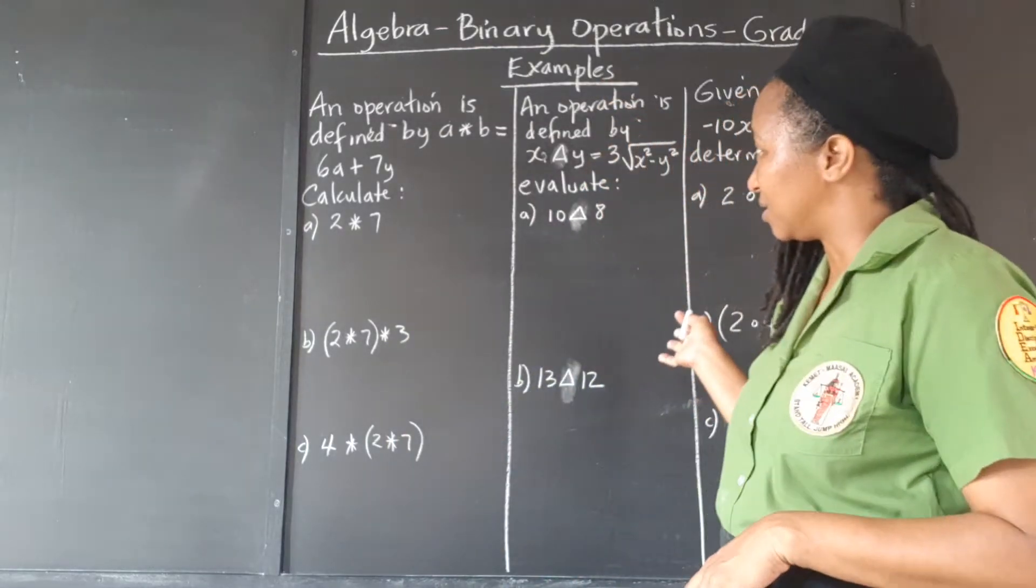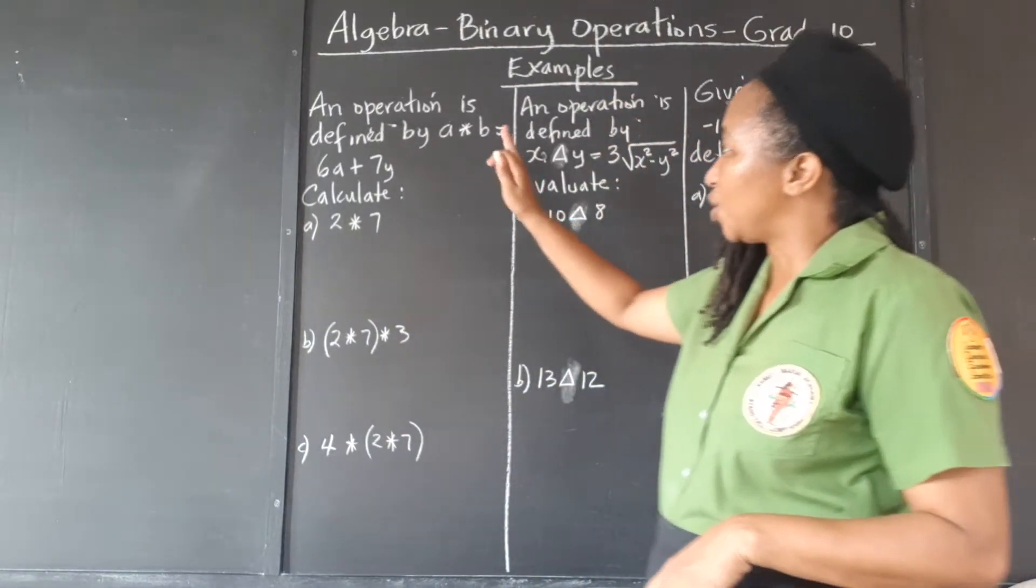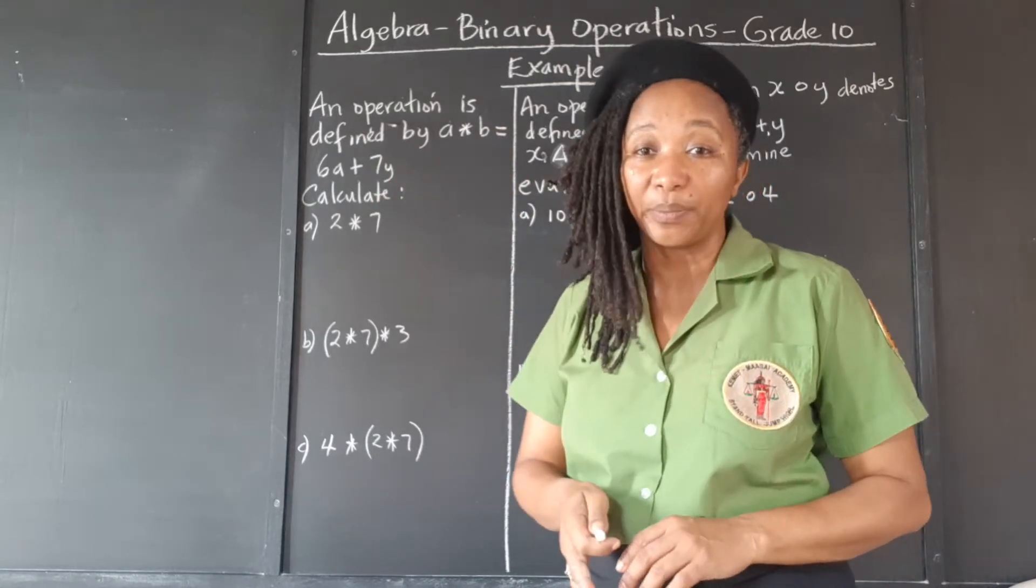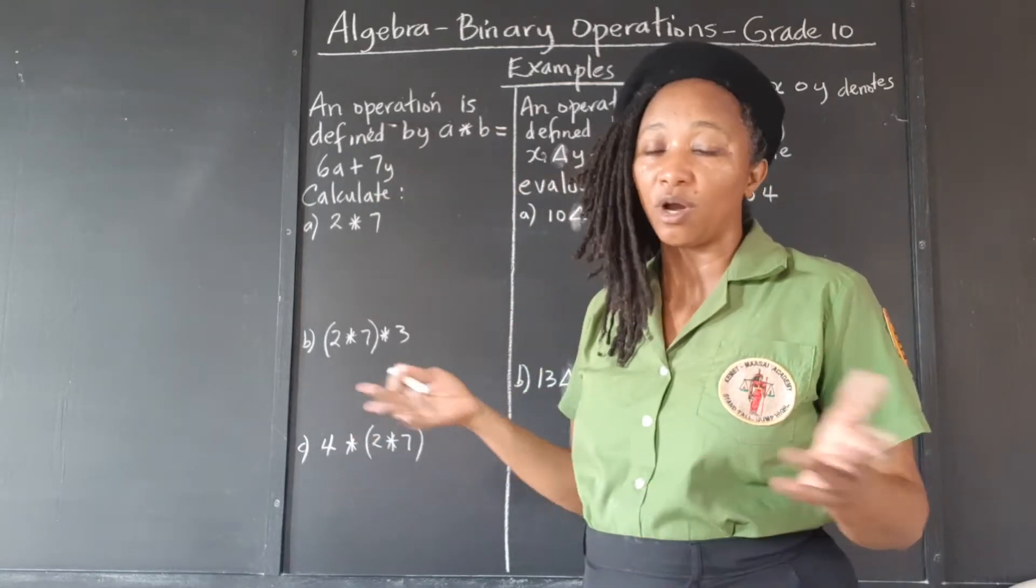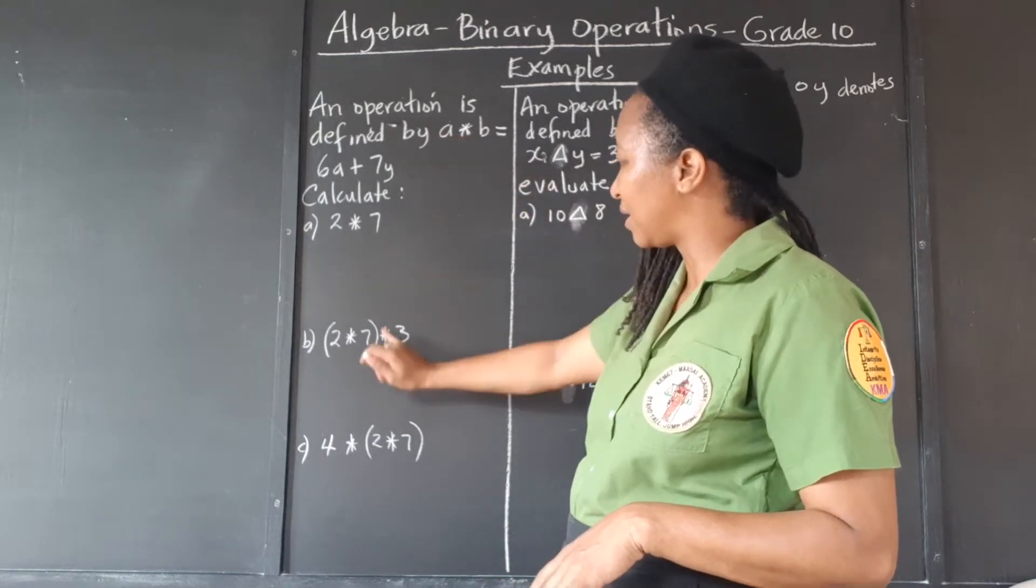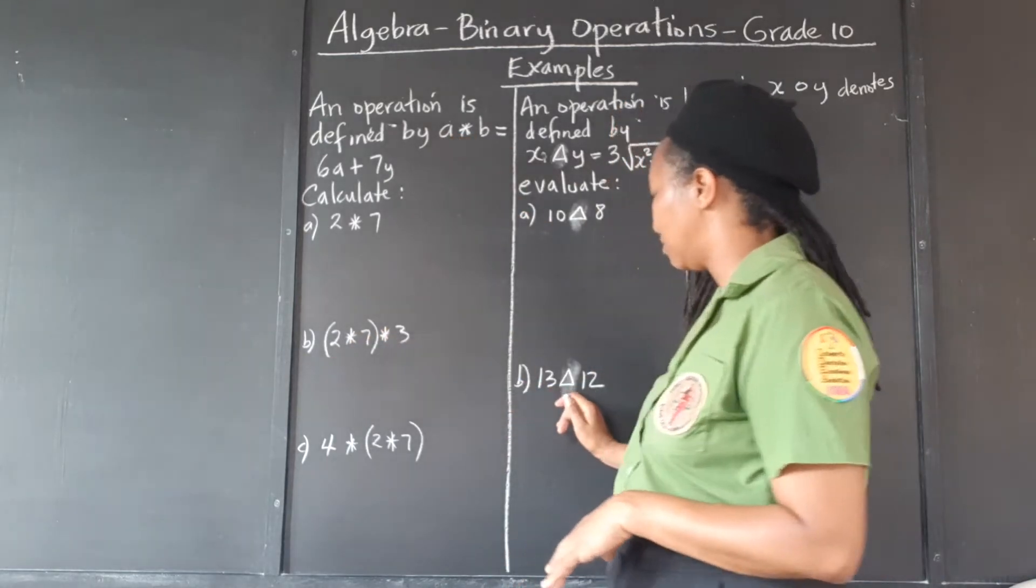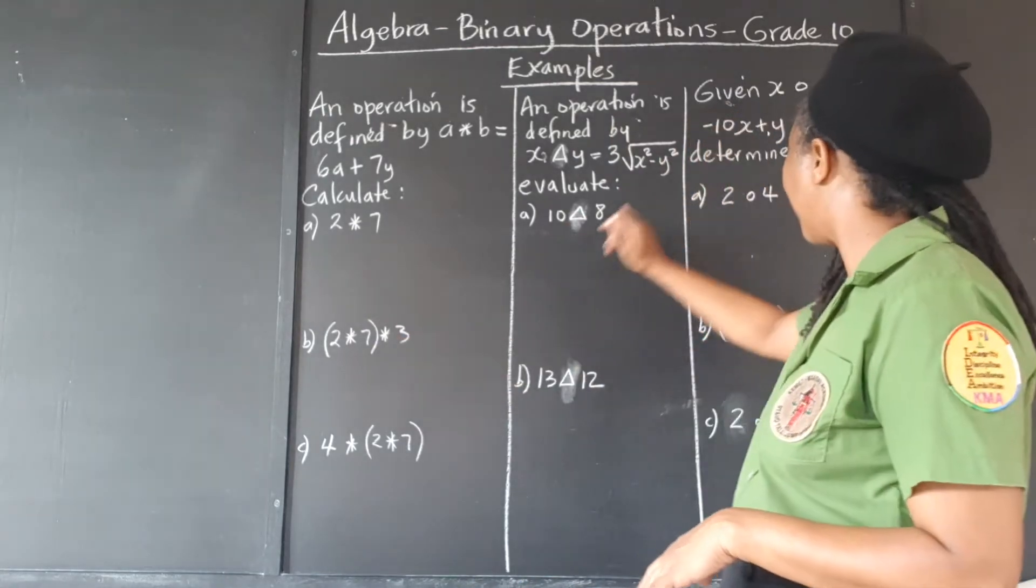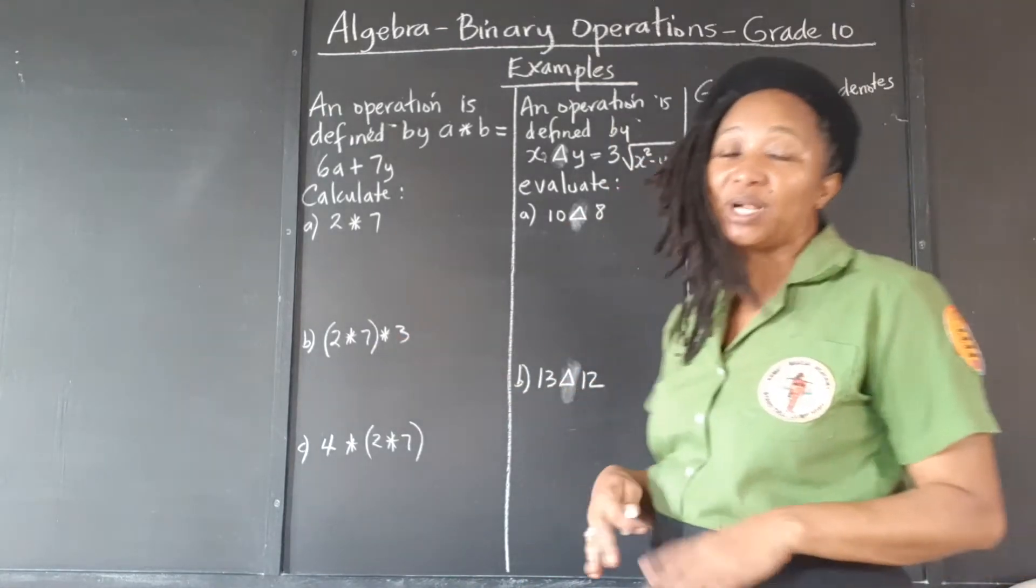In binary operations, you will be given two variables or however number of variables. The operation itself can be any symbol. So an asterisk, a triangle, a circle, any symbol can be used.